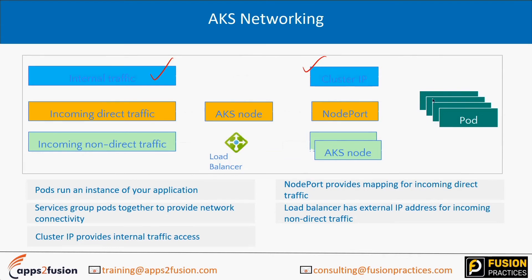For networking in AKS, you have different options. If you want to connect to internal traffic, you can have a Cluster IP assigned — this allows you to communicate between multiple containers within the pod. If there is incoming direct traffic coming to your node, you can connect to that specific node on a defined port using Node Port. One pod might be connecting on a certain port, and another pod on a different port.